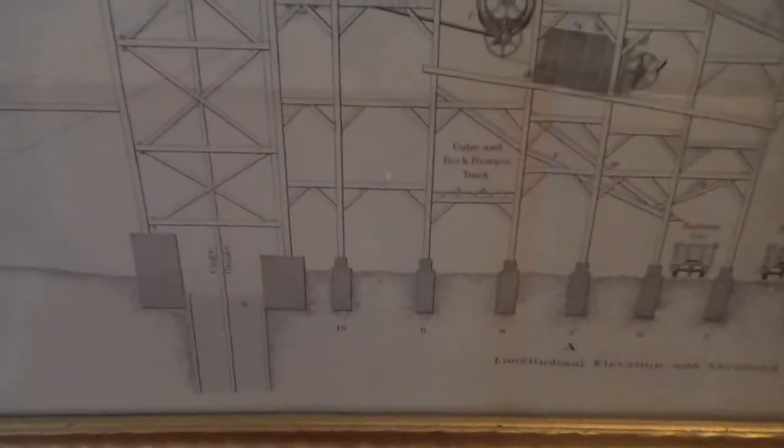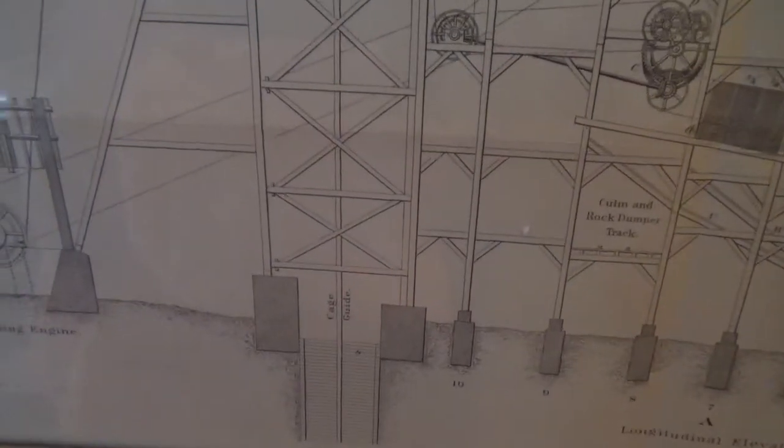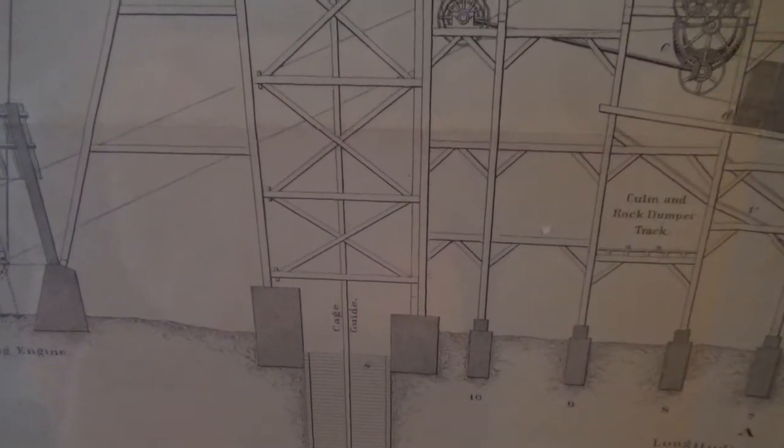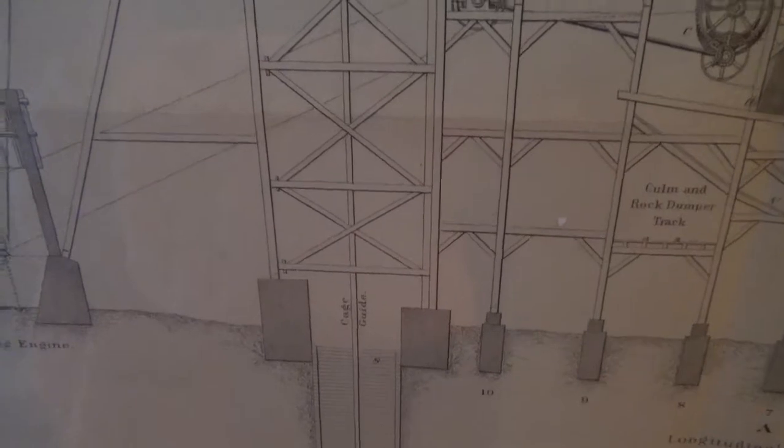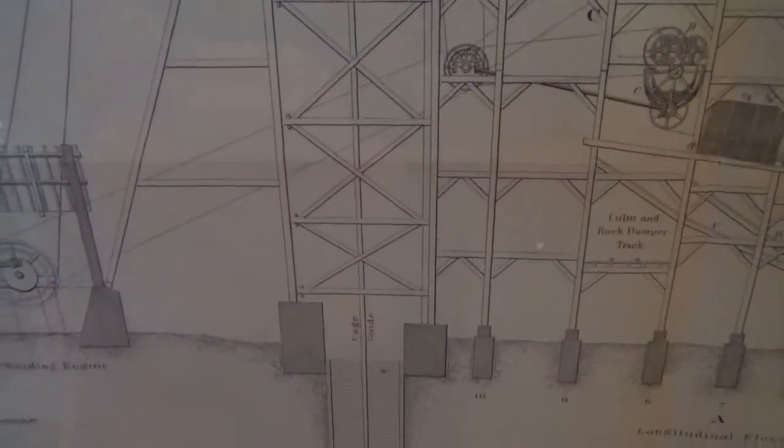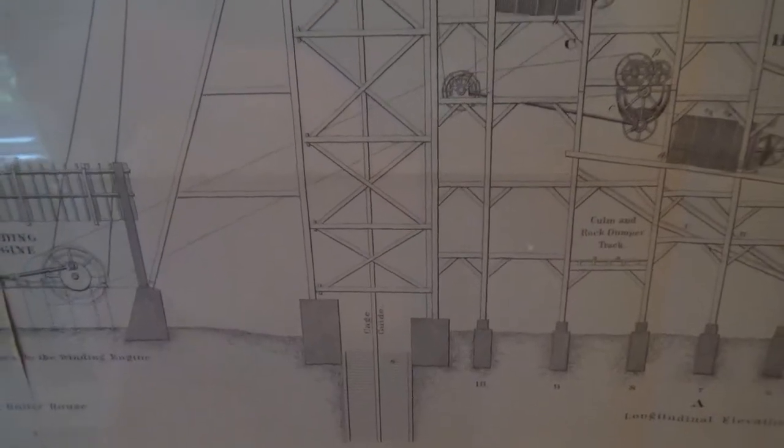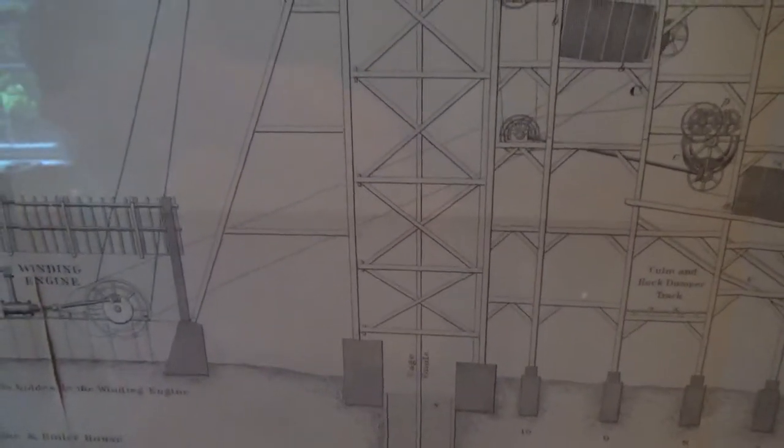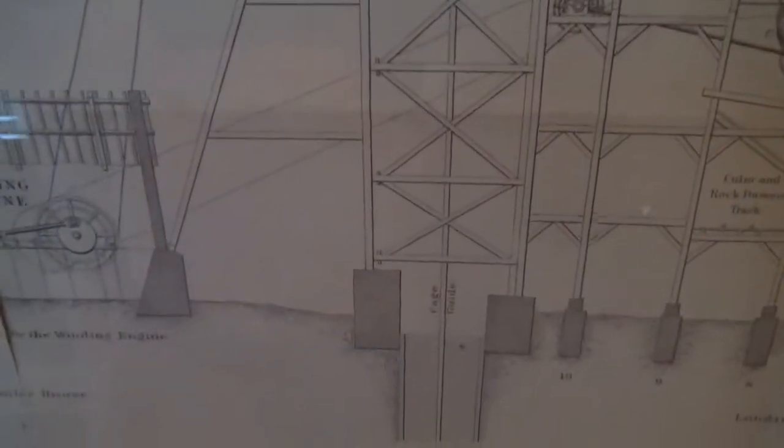It's a very primitive breaker because the breaker was built in conjunction with the shaft head frame right over the mine opening. They weren't allowed to do that post-Avondale, so 1870 onward. The disaster occurred in 1869. This is why Avondale was such a death trap.